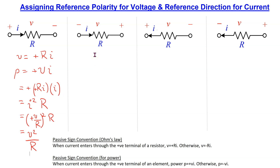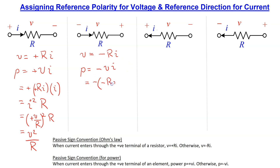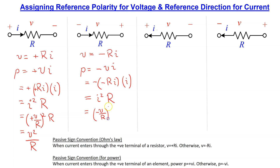In the second case, the conventional current is entering the terminal marked negative. Hence we use Ohm's law with a minus sign, so V equals minus R times I. We also use the power formula with a negative sign, so power equals minus V times I. Substituting the value of V, this becomes minus times minus R times I, multiplied by I, which equals I squared R. Substituting the value of I from Ohm's law, this equals minus V over R, squared times R, which is also equal to V squared over R.